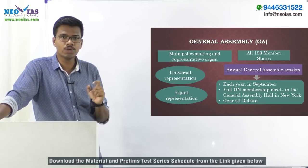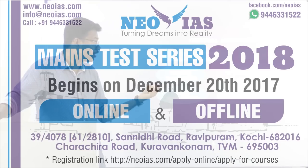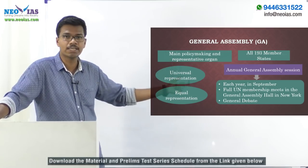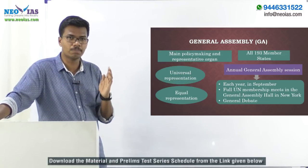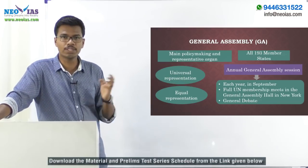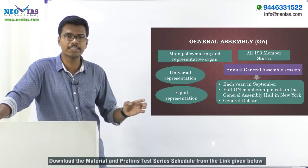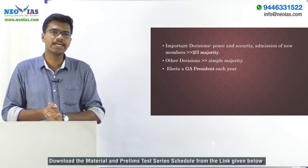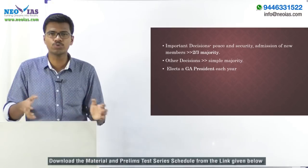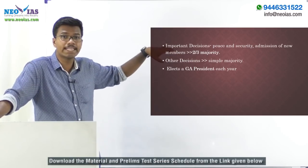Every year, the UN General Assembly holds its annual session in September. This is a meeting between all UN member states held at the General Assembly Hall in New York. As part of the annual session, there is a general debate where many heads of state and heads of government address the assembly. For important decisions related to peace, security, or adding a new member, a two-thirds majority is required.